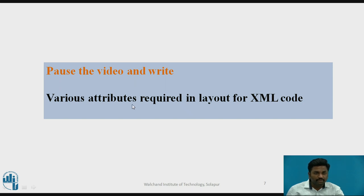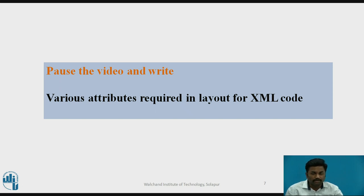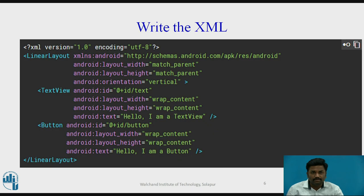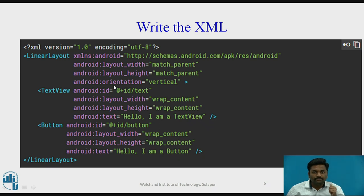Here is a simple question: what are the various attributes required in a layout for XML code? You can pause the video, rewind, and give an answer. The answer is: Android namespace, layout_width, layout_height, and orientation. These are the four important attributes we have seen in linear layout.